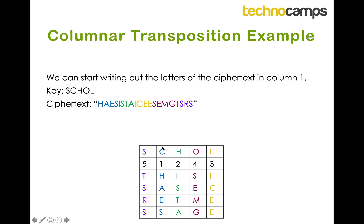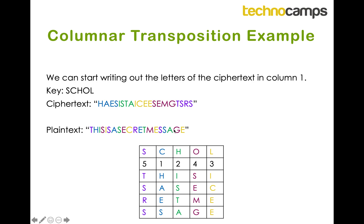The final step is to read off the plain text row by row. I take the first row T-H-I-S-I, then the second row S-A-S-E-C, then the third row, then the fourth row. The secret message reads: 'this is a secret message'. Have a go now at finishing the worksheet — both the number key and word key types. There are explanations on the worksheet if you're unsure, and you can also rewatch the video. Once you've cracked all the secret messages, have a go at the quiz to get your points on the leaderboard. Good luck!